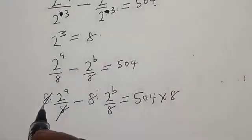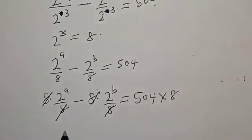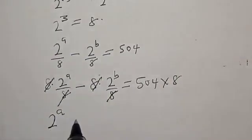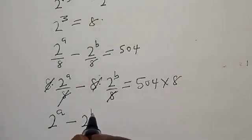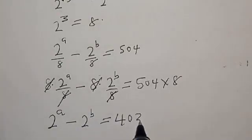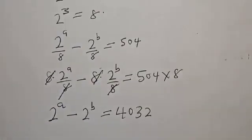The 8s will cancel out. Then we have 2 raised to power a minus 2 raised to power b equal to 40. That is 5/4 times 8.